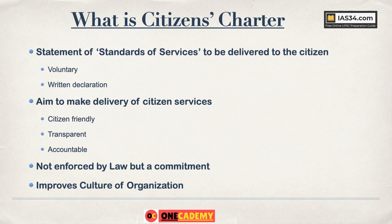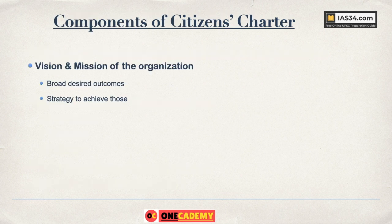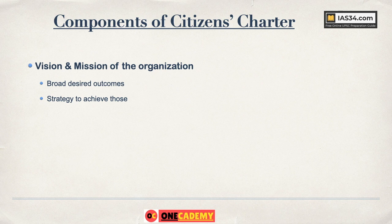Now let's learn what are the components of Citizens Charter. First, it should have a vision and mission of the organization displaying the charter. Vision refers to broad desired outcomes — for example, the vision of a municipality could be to make the city one of the best livable cities in the world. Mission is the strategy to achieve those broad desired outcomes.